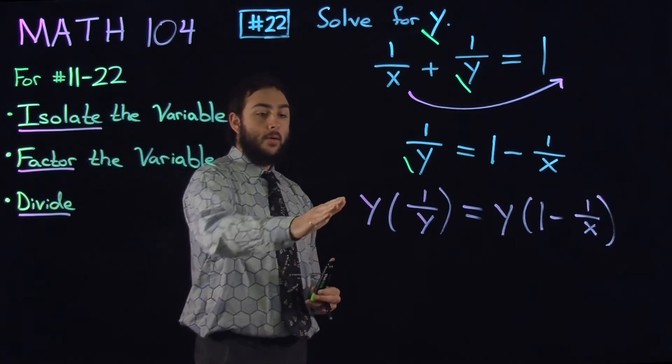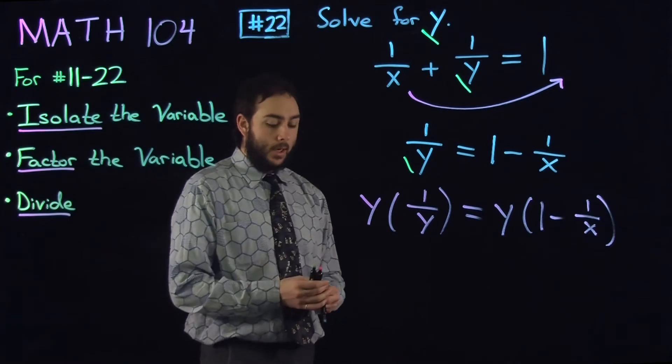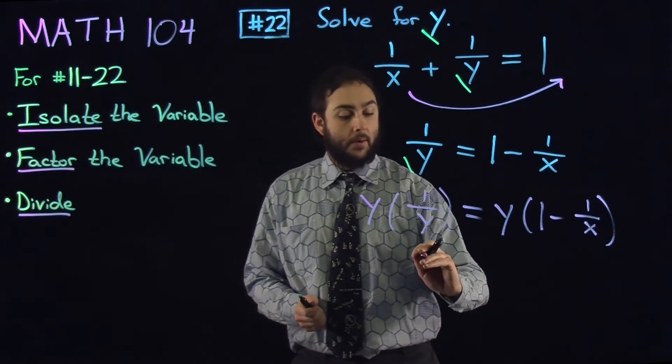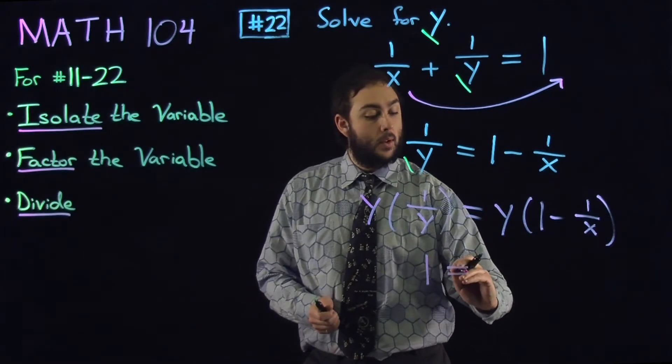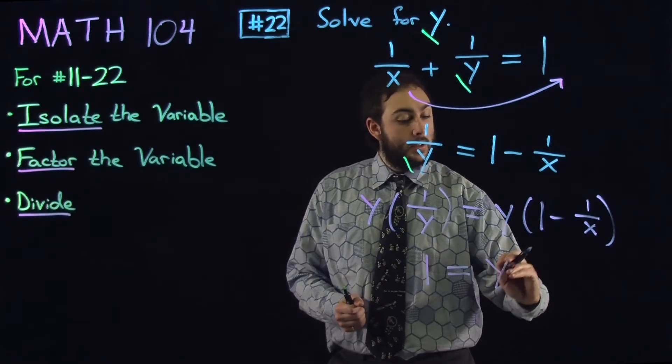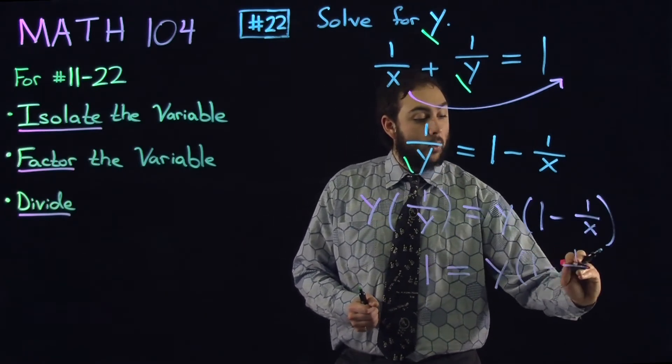Well, on the left, y cancels with the y in the denominator, and we're just left with 1. On the right, we have y times 1 minus 1 over x.